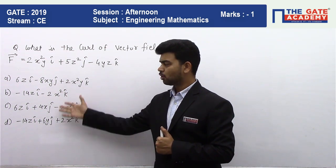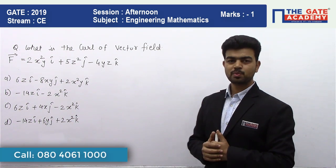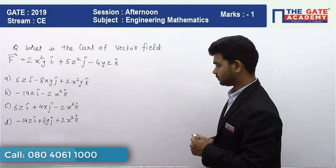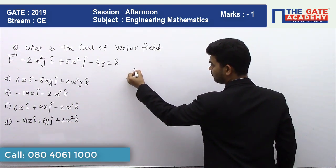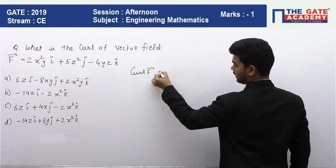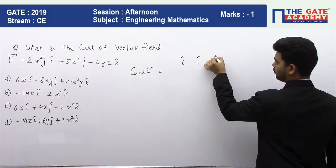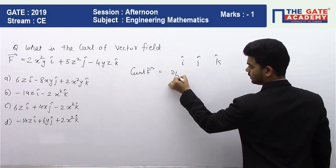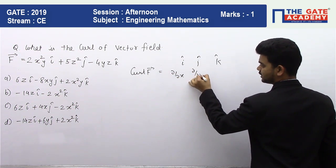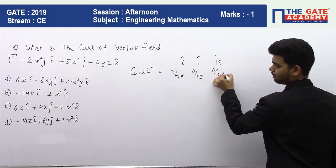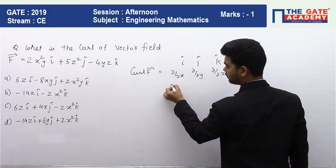It is a very direct question. We know curl of any vector field can be found out by this expression. Here the x component of F is 2x²i.